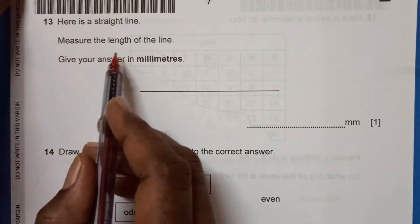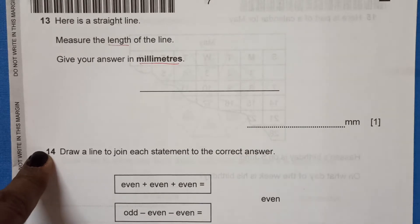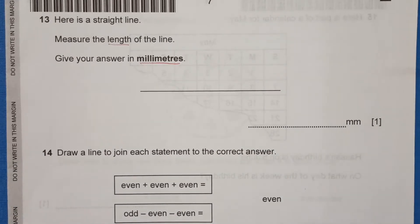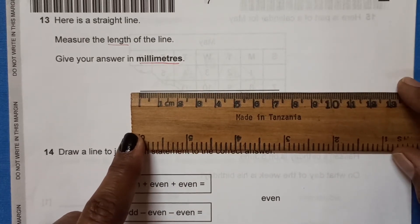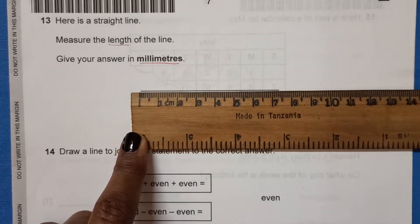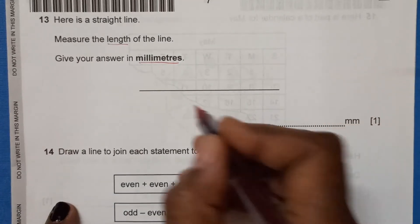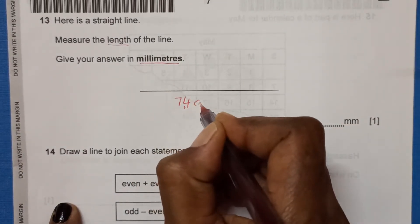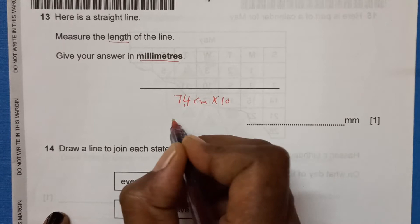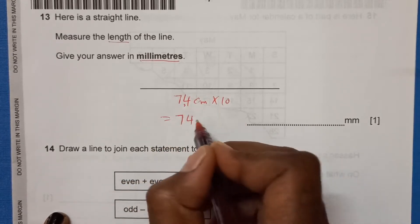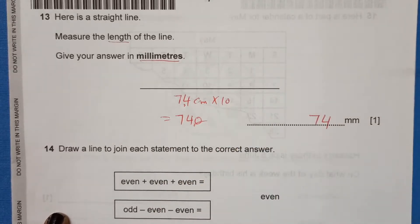Question 13: here is a straight line. Measure the length of the line and give your answer in millimeters. We will measure this with the ruler. You can see it measures from 1 to 7.4, so this is 7.4 centimeters. To convert to millimeters, we multiply by 10: 7.4 times 10 equals 74 millimeters.